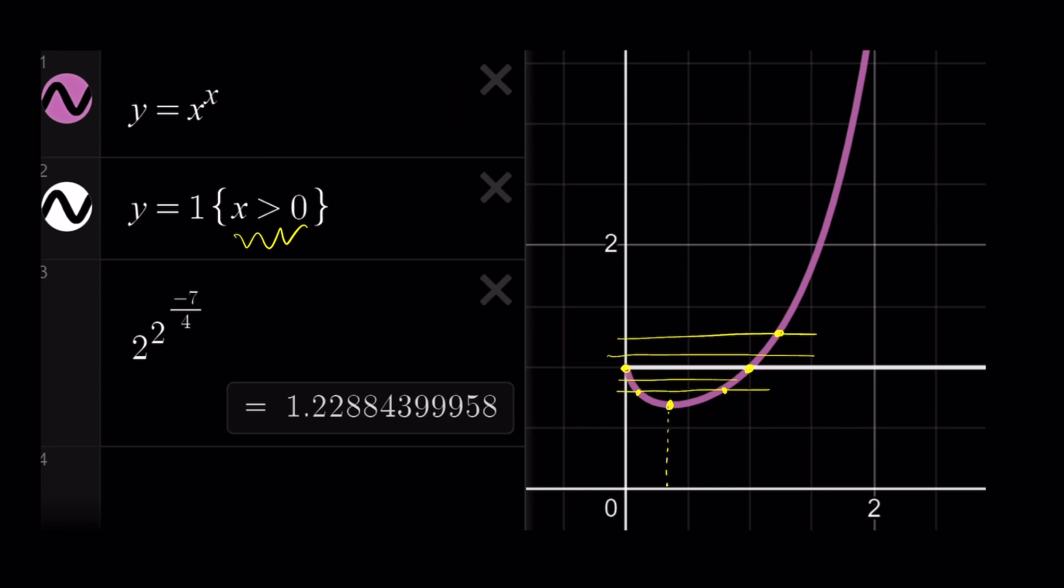It's important to look at our value in this case the y value which is 1.22884399958 which is obviously greater than 1 therefore there's going to be a single intersection point. So this means we're going to have a unique solution. Let's go ahead and try to find it using Lambert's W function.